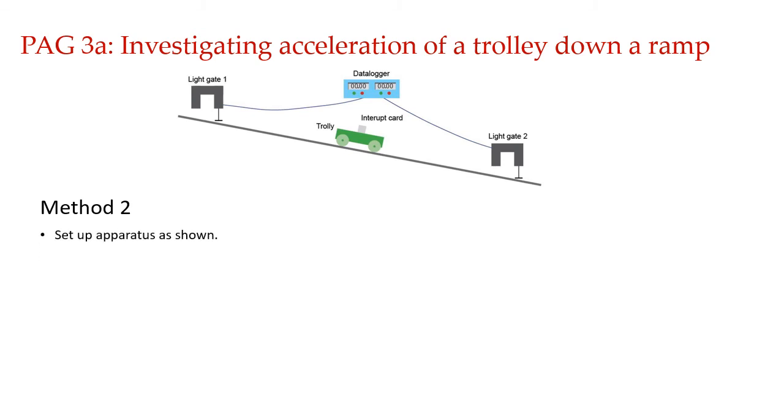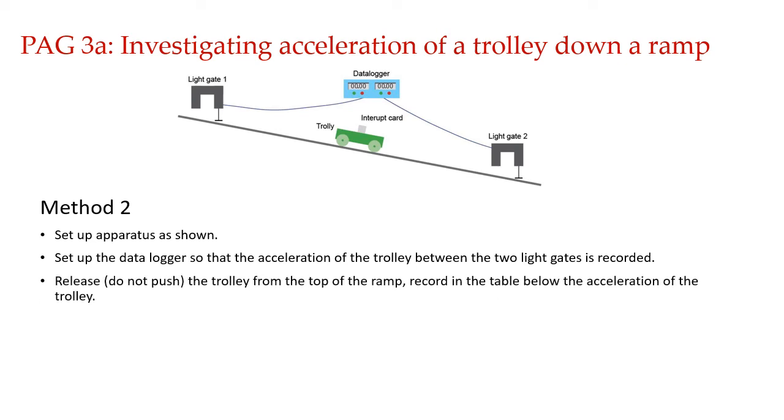Here also you do the same thing. You set up the apparatus. On the top of the ramp and at the bottom of the ramp, you set up two light gates. You again release the trolley from the top of the ramp and you wait for it to come down. And all you need to do is just click on the data logger. It will show you the acceleration. What the light gate does is, when it crosses the first light gate, it calculates the speed of the trolley there. When it crosses the second light gate, it calculates the speed of the trolley there. So you have the initial and final speed and it will also automatically calculate the time. And then it will do all calculations and give you the acceleration.